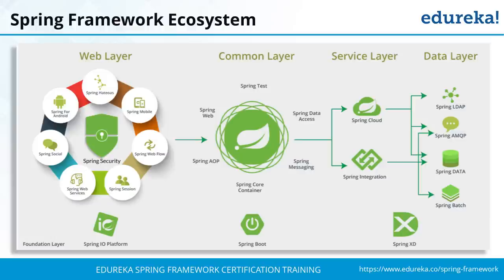The Spring Framework ecosystem includes a web layer, common layer, service layer, and data layer. It is built on the Spring IO platform. The common layer includes Spring Boot, while service and data layers include Spring extensions and other components. These layers interact through the various modules available in Spring.